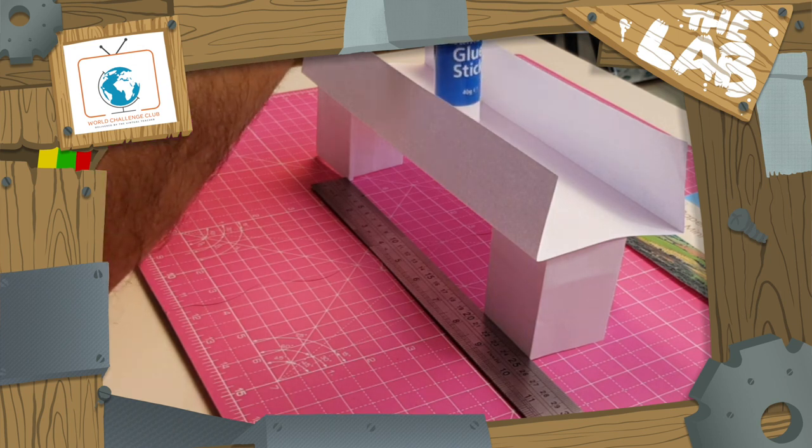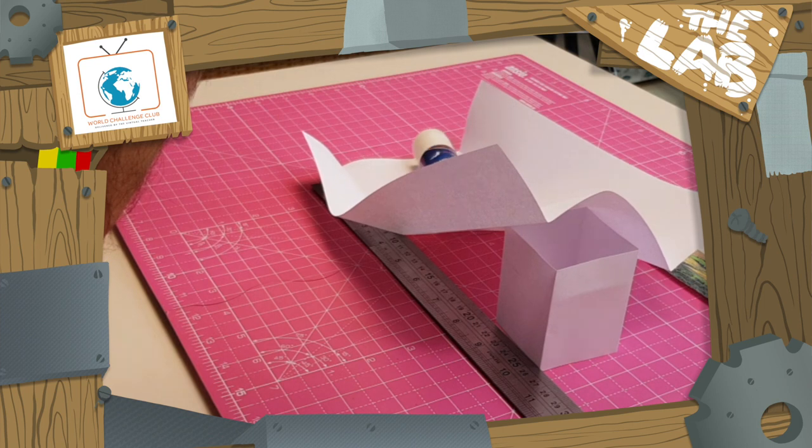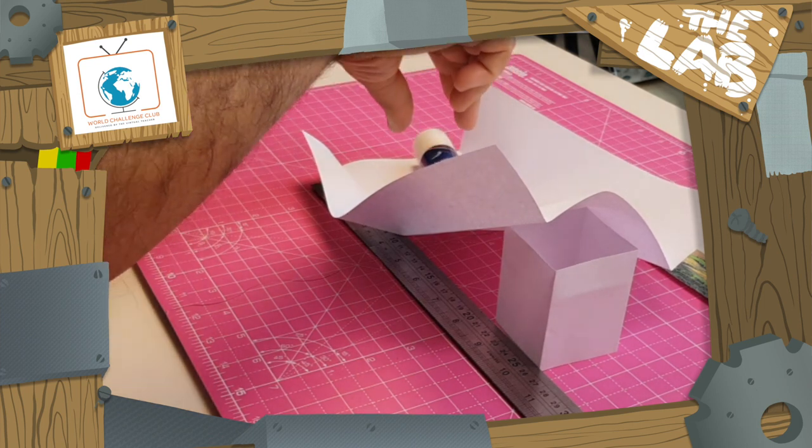A little glue stick on there. And you see it clasps these. So what can you do to make it a bit stronger?